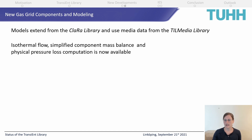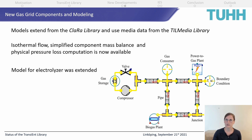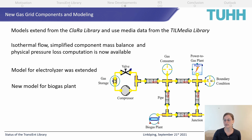These simplifications are available in all of our gas grid components — for example, pipes, joints, boundaries, valves, and compressors. We also adjusted and redefined our electrolyzer model, where you can now choose between different pressure loss calculations, energy balances, and heat transfer approaches. Also new in our library is a biogas plant model. This was also presented in 2019, so if you are interested in more details, please look at the publication by my colleague Carsten Bode.